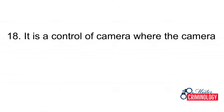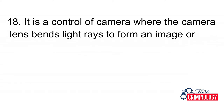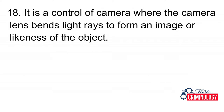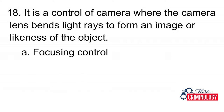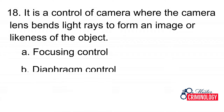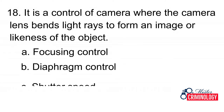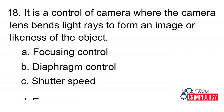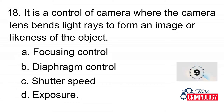Question 18: It is a control of camera where the camera lens bends light rays to form an image or likeness of the object. A. Focusing control, B. Diaphragm control, C. Shutter speed, D. Exposure. Answer: A. Focusing control.